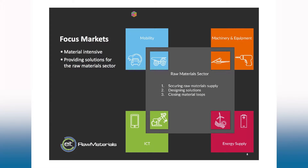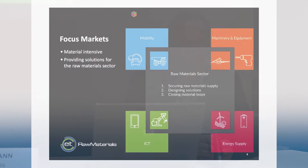We are focused on four main market sectors today. The first is mobility — think batteries and lightweight mobility — and also machinery and equipment used in mining and exploration. We are also focused on energy supply with all the new alternative energies available. And at CEA LIST, we will also focus on ICT.